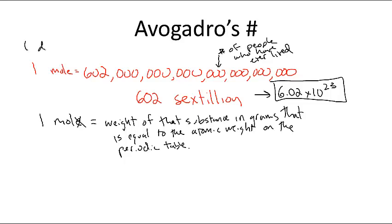So just like one dozen equals 12, one mole is 6.02 times 10 to the 23rd. So if I had a mole of people, I'd have 6.02 times 10 to the 23rd of those people. If I had a mole of pens, I'd have 6.02 times 10 to the 23rd of those pens. It's just a way to count a large number of objects.